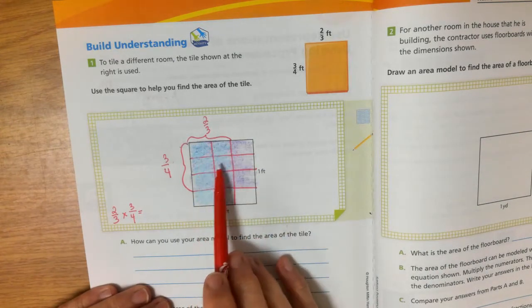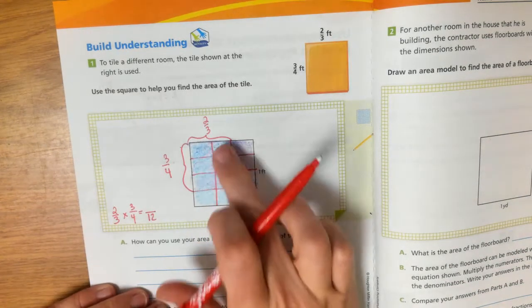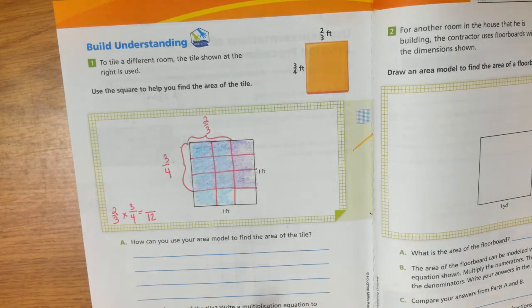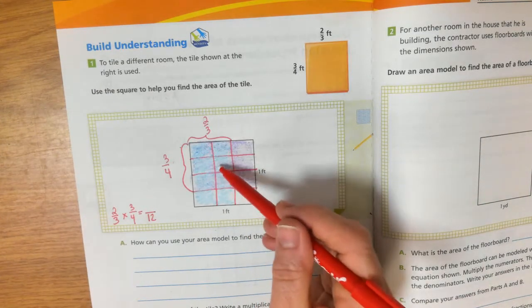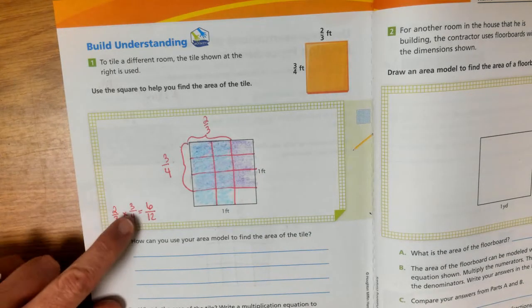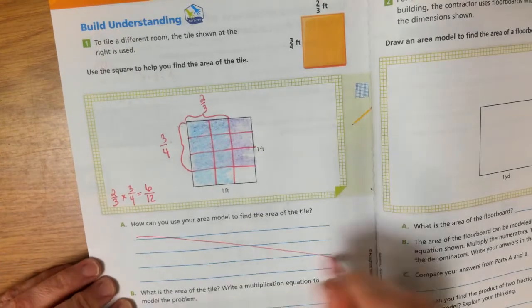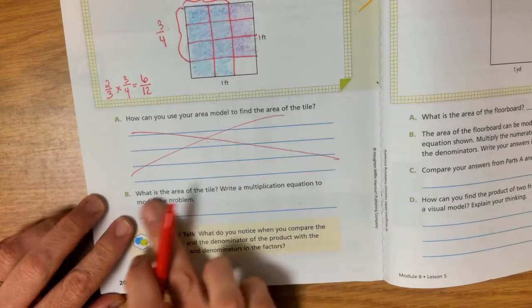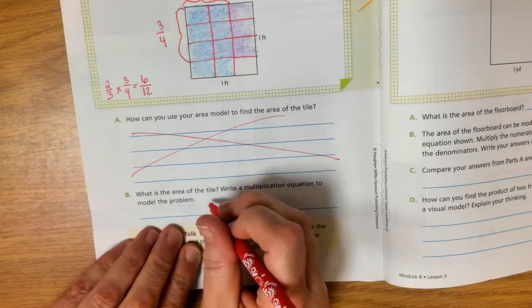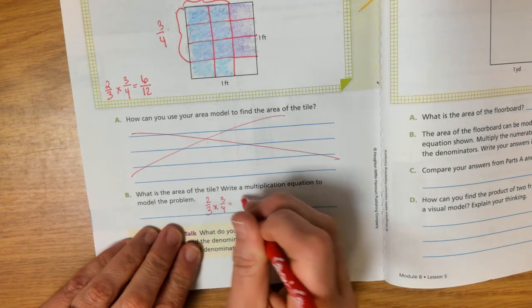One, two, three, four, five, six, seven, eight, nine, ten, eleven. I have twelve total pieces. And how many are shaded by both colors? One, two, three, four, five, six. So two thirds times three fourths equals six twelfths. So we're not going to worry about letter A. The area of the tile, two thirds times three fourths equals six twelfths.